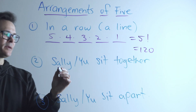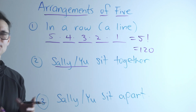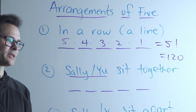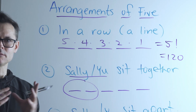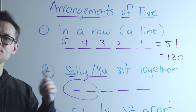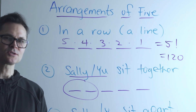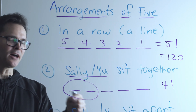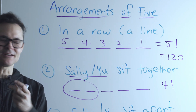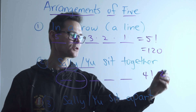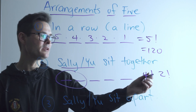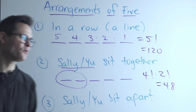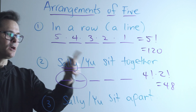Now let's change things up. What if Sally and you — a couple among the five — want to sit together? We treat them as one combined object, so now we're arranging four objects: four factorial. But within that love bubble, there are two ways they could sit — Sally-you or you-Sally — so two factorial. By the fundamental counting principle we multiply those together, giving us 48 arrangements where Sally and you are together.